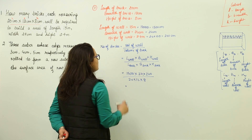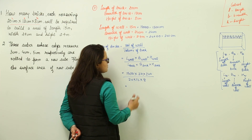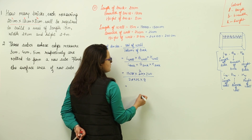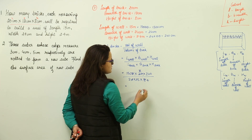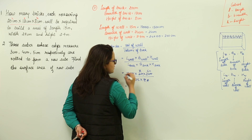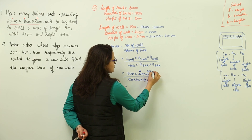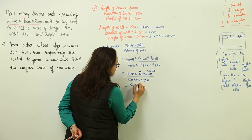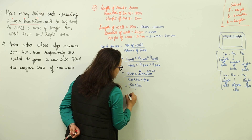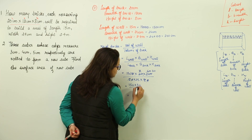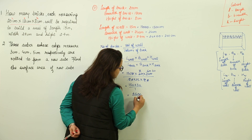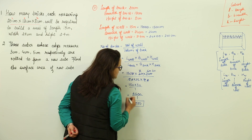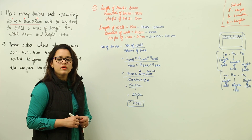Now we solve this. Since all terms are in multiplication form, we can cancel common factors. Canceling zeros and simplifying: 2 × 4 = 8, 4 × 6 = 24, 2 × 3 = 6, leaving 150 × 30 divided by 1. That gives 4500. So the number of bricks required to build this wall is 4500 bricks.